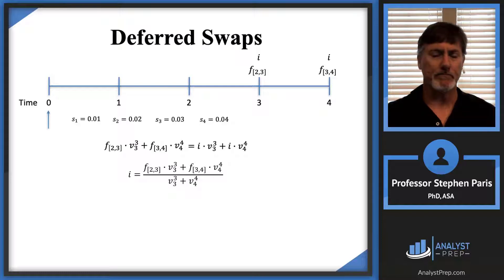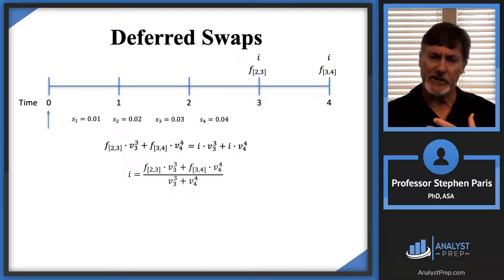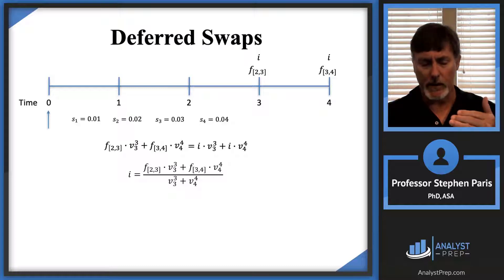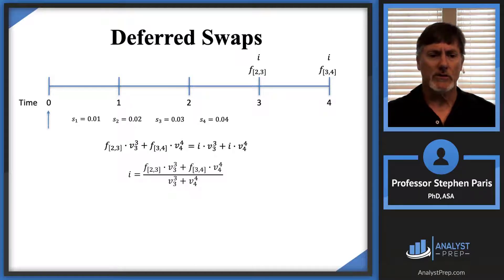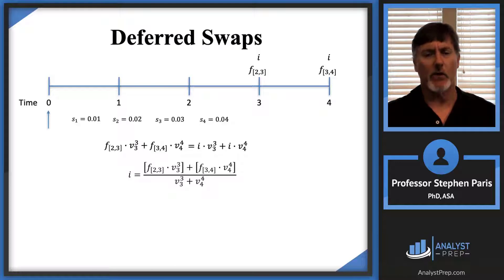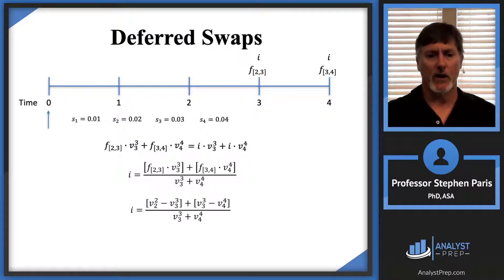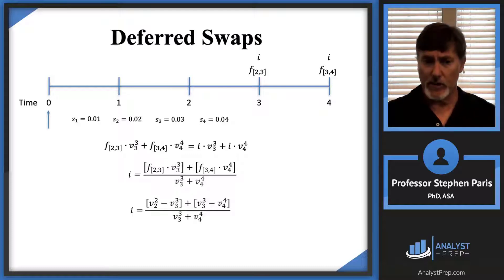At this point you have enough information to calculate the forward rates, but those calculations are tedious. There's a way to simplify: do a symbolic computation first and it'll make the calculator work much easier. When you take a forward rate and multiply it by its appropriate discount factor, it becomes equivalent to the difference between v-factors. For example, the first term in the numerator becomes v₂² minus v₃³, and the second term becomes v₃³ minus v₄⁴.